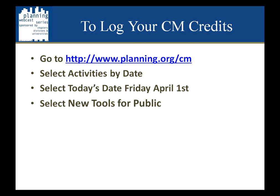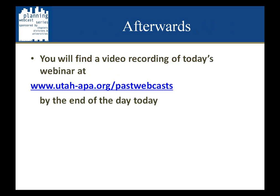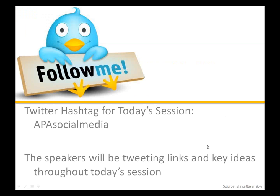To log your CM credits for today's event, go to planning.org backslash cm. Select today's date, Friday April 1st, and select the item New Tools for Public. A video recording will be made available at utah-apa.org slash past webcasts by end of day. We are also hosting a Twitter feed for today's session using the hashtag APASocialMedia. Our speakers will be tweeting links and key ideas throughout the session.